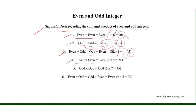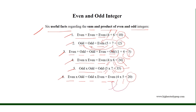The product of two even integers results in an even integer. For example, 4 times 6 equals 24, where 24, 6, and 4 are all even integers. The product of two odd integers results in an odd integer — for example, 5 times 7 equals 35, where 35, 7, and 5 are all odd integers. The product of an even integer and an odd integer results in an even integer — for example, 4 times 5 equals 20, where 20 is even, 4 is even, and 5 is odd.